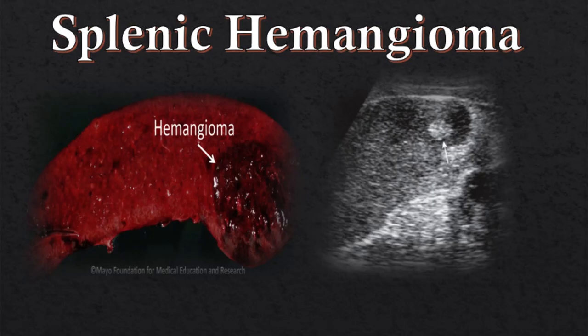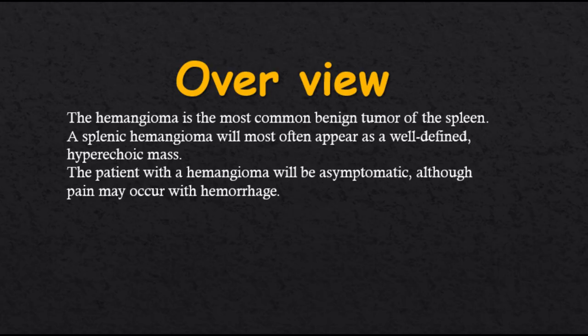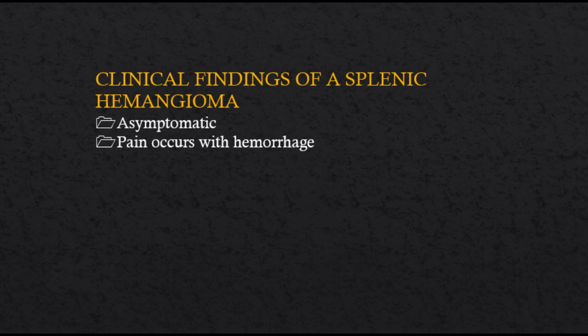Splenic hemangioma. The hemangioma is the most common benign tumor of the spleen. A splenic hemangioma will most often appear as a well-defined hyperechoic mass. The patient with a hemangioma will be asymptomatic, although pain may occur with hemorrhage. Clinical findings of a splenic hemangioma: asymptomatic; pain occurs with hemorrhage.